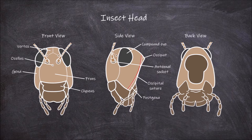The mouth parts of the insect are also located on the head and consist of five different parts. The first part is the labrum, also known as the upper lip of the insect mouth. The labrum forms the roof of the mouth.